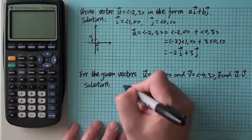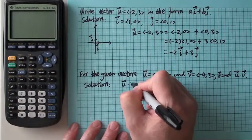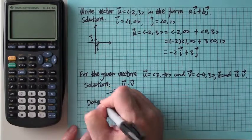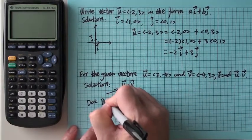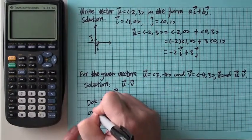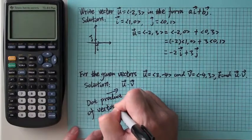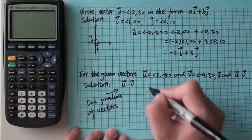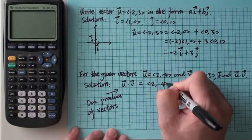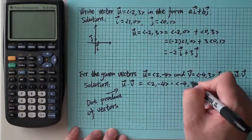This is the dot product of vectors. So down here, you will have ⟨2, -4⟩ dot ⟨-4, 3⟩.